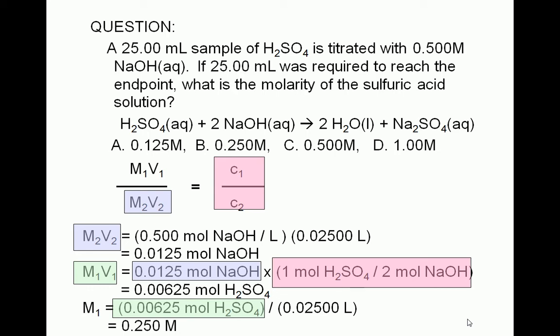Finally, we divide moles of sulfuric acid by the volume of sulfuric acid solution in liters to get a molarity of 0.250 moles per liter. Therefore, the correct answer is B.